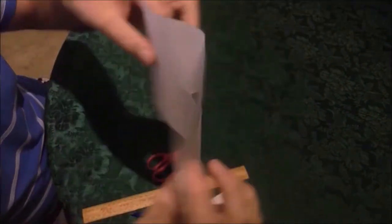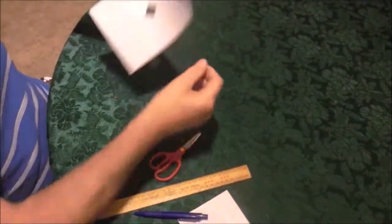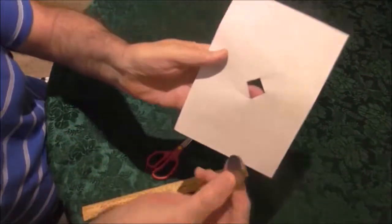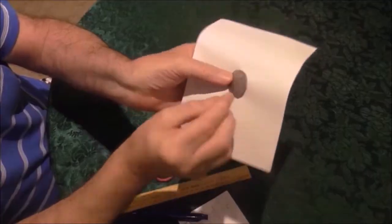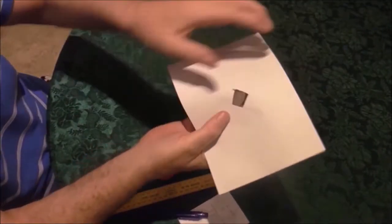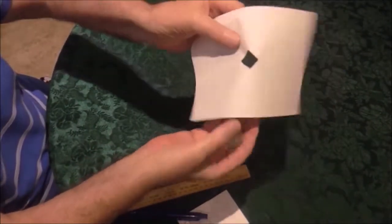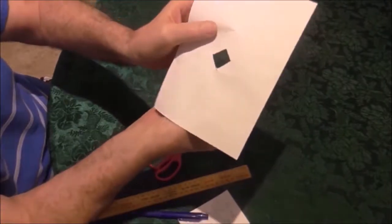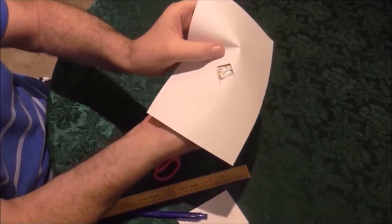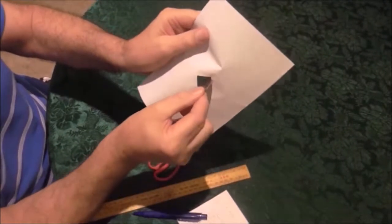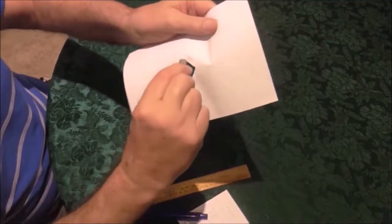And of course that hole being 27 millimetres across is too small for that coin to go through. Because the coin is 32 millimetres. The hole is 27 millimetres.